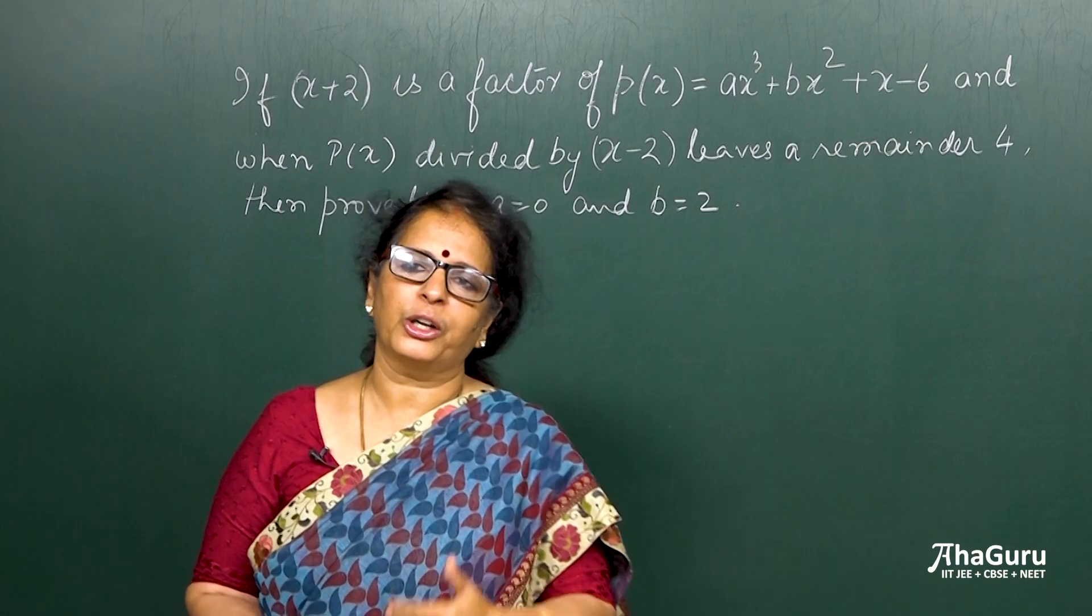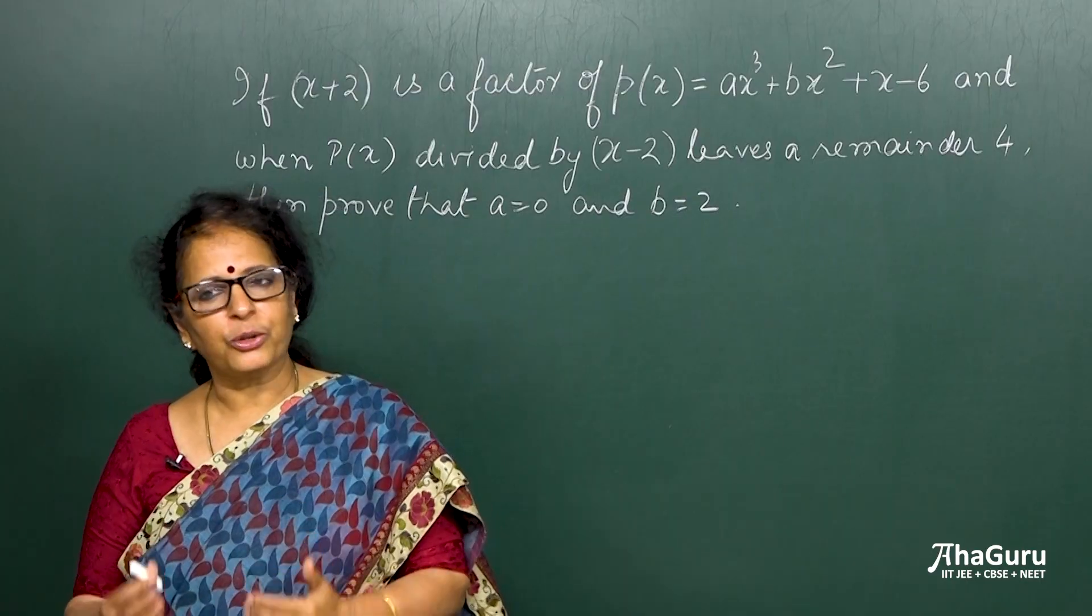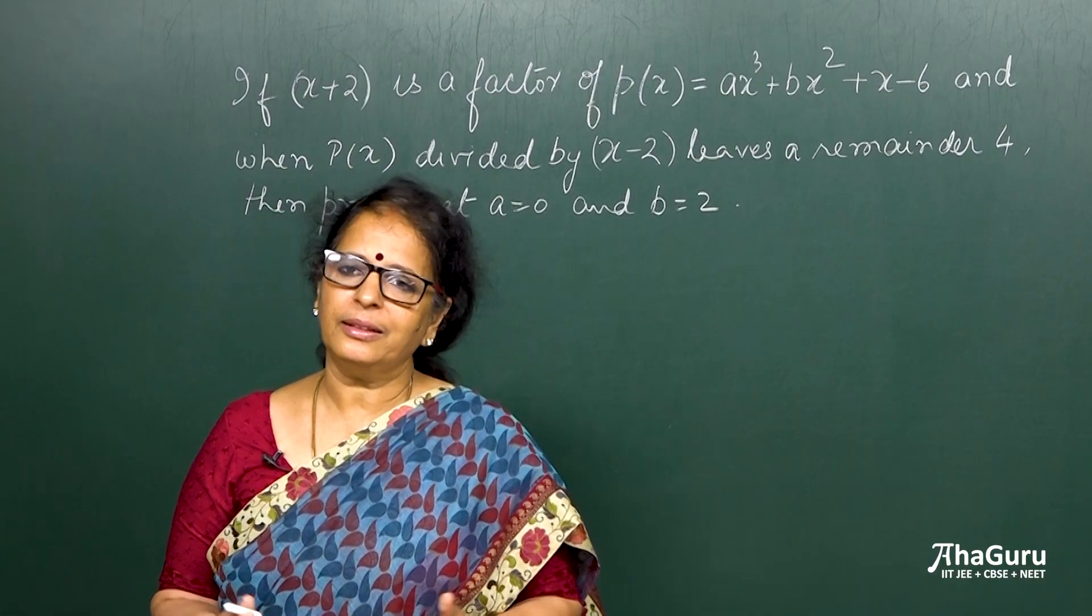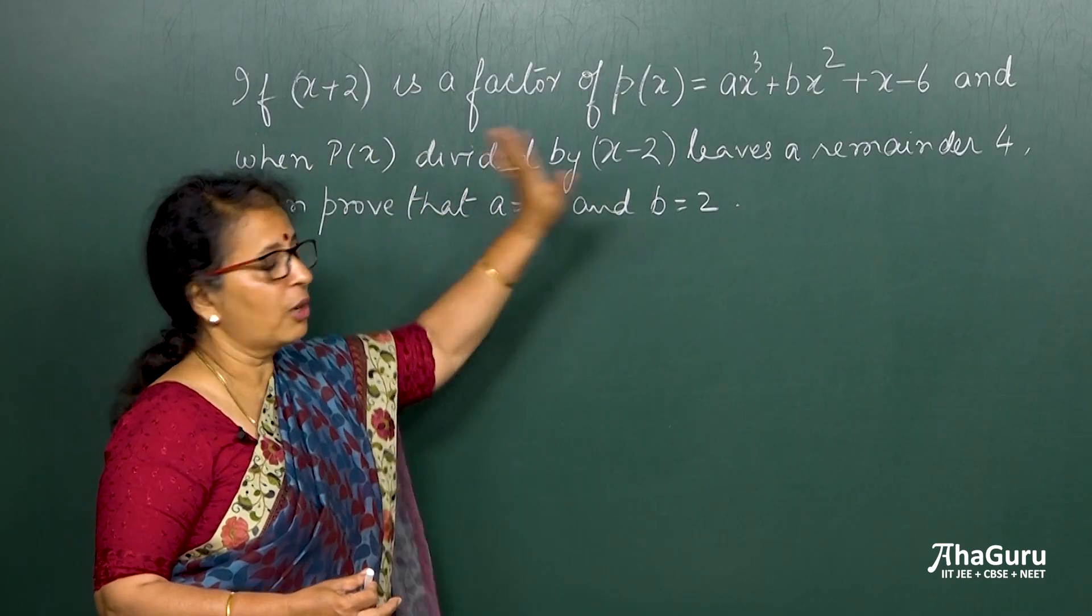Whenever a number is a factor of another number and it is divided, it doesn't leave a remainder. So it is called a factor. When there is a remainder, obviously it is not a factor. So this is a factor and this is not a factor.